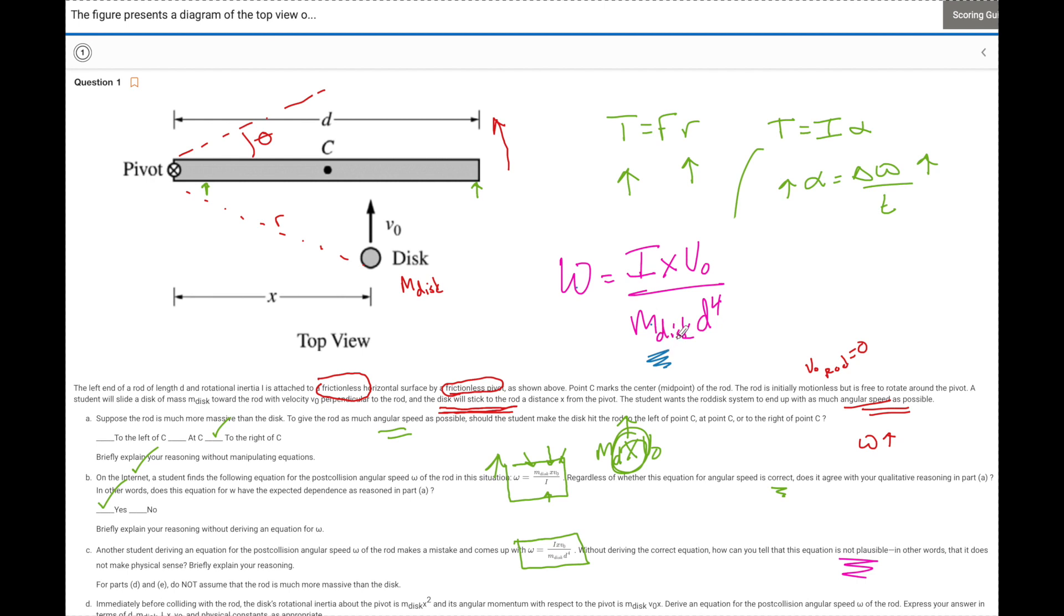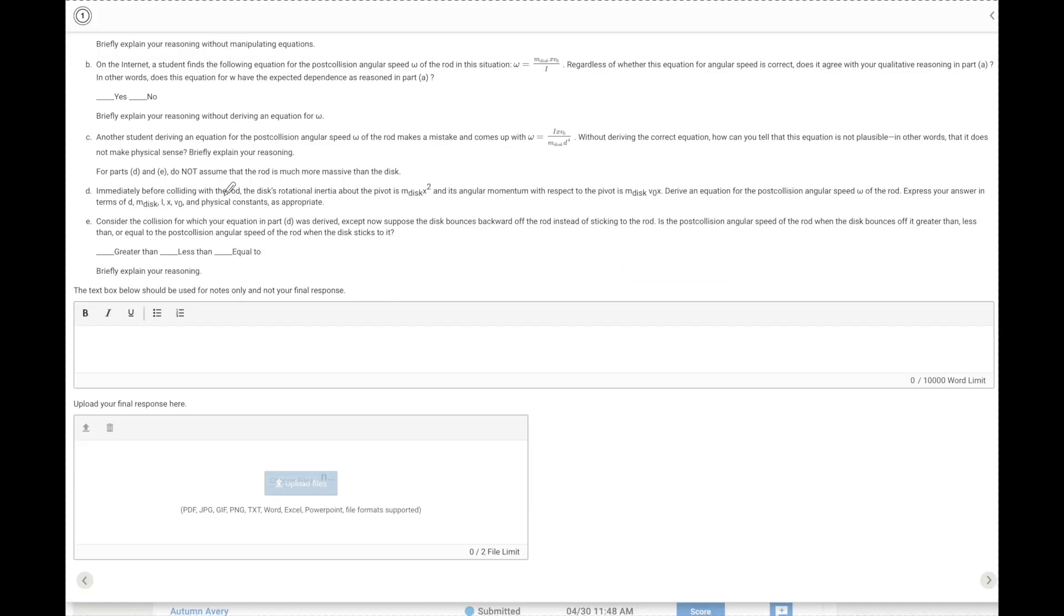So to clean that up, I would just simply say the greater M of the disc will give a greater angular momentum and therefore a greater speed. And this direct relationship is not shown by the equation. It's shown by an indirect.